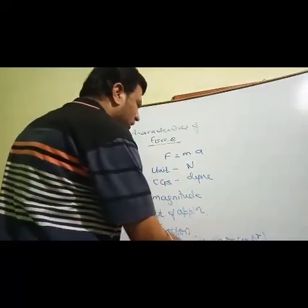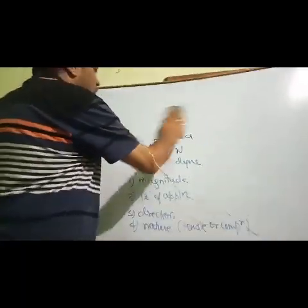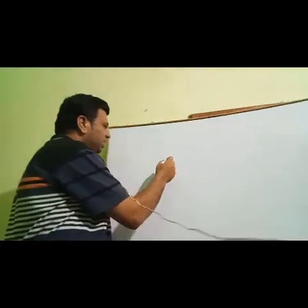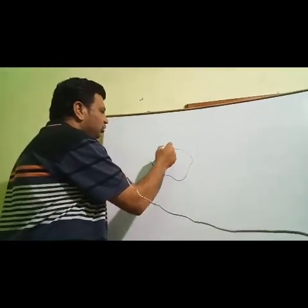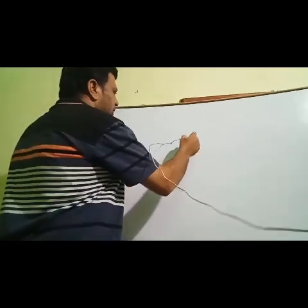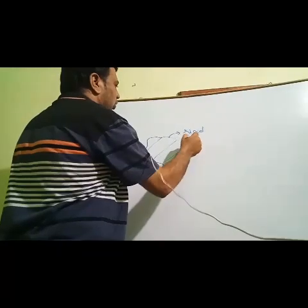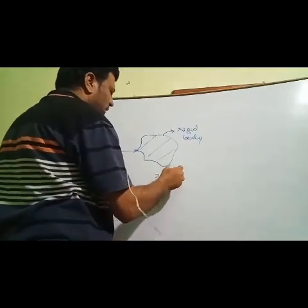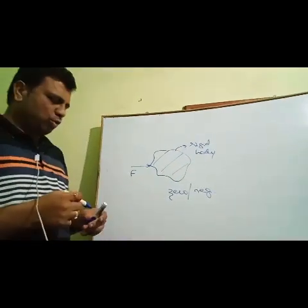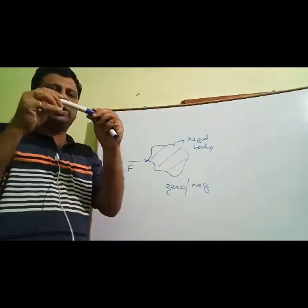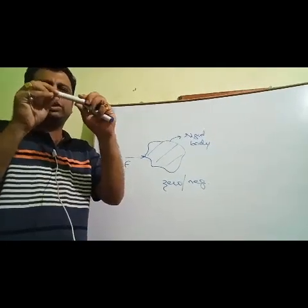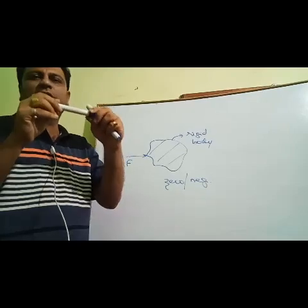After force, the next part we come across is what is a rigid body. A rigid body is basically a body which shows negligible deformation on the application of external force. For example, I am applying force on this pen. Because of the application of force, the shape of this pen does not change.